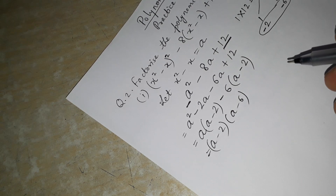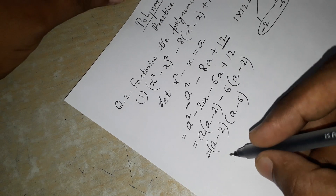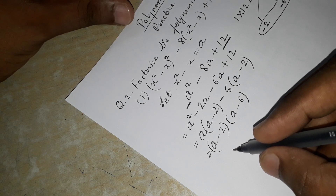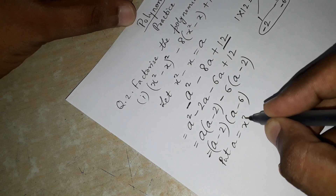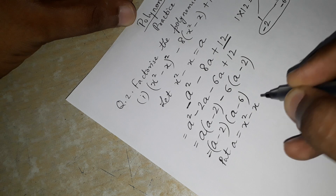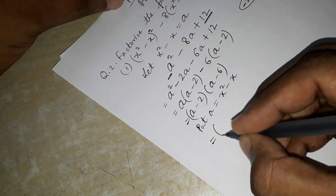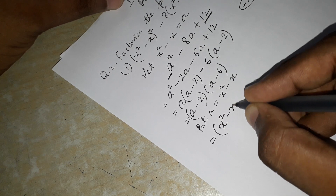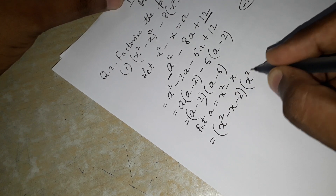But the problem is not fully solved because a was our assumption. Instead of x² - x we had put a. So now we resubstitute: put a equal to x² - x. Our expression becomes (x² - x - 2)(x² - x - 6). Now we have two polynomials in brackets which we need to solve.